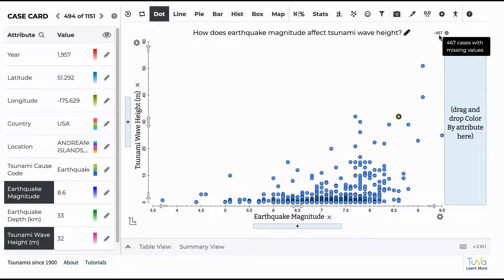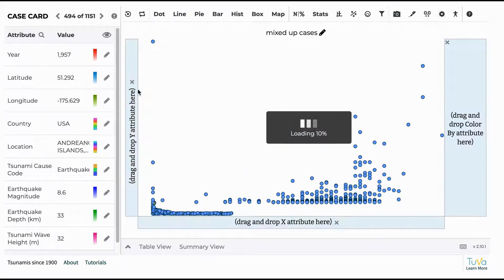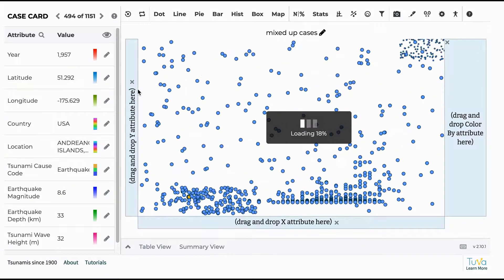So when they're ready to build their next graph, how does earthquake depth affect tsunami wave height, the first thing they'll need to do is click the X next to the variables. And that information will go away and they will start with a fresh graph.